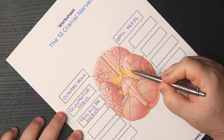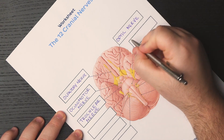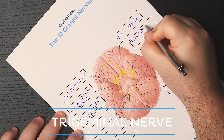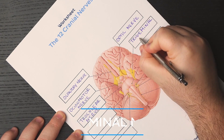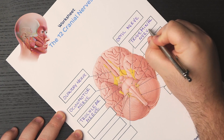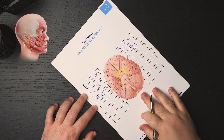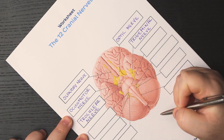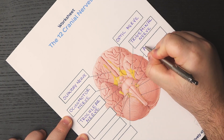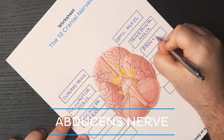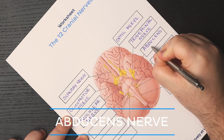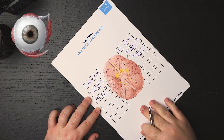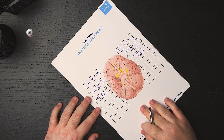And here we have a quite large nerve, cranial nerve 5, or the trigeminal nerve. As the name implies, the trigeminal nerve has three divisions. It is a mixed nerve that supplies sensation to the facial skin. Next, we have here at the center cranial nerve 6, or the abducens nerve. This is a motor nerve that supplies one extraocular muscle — the lateral rectus muscle — thus playing an important role in eye movement.